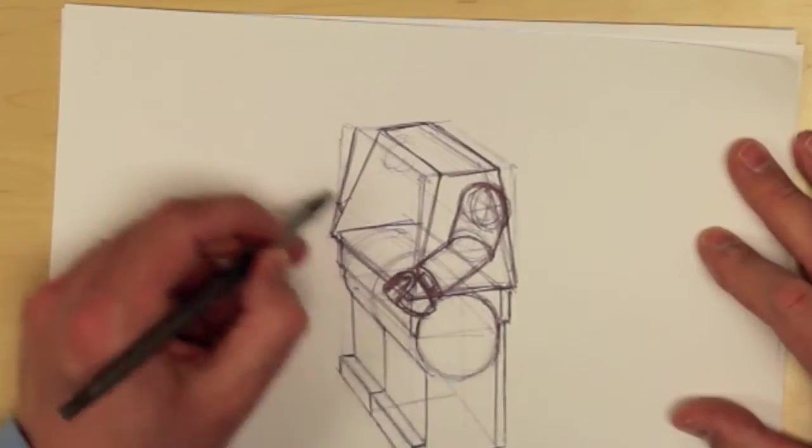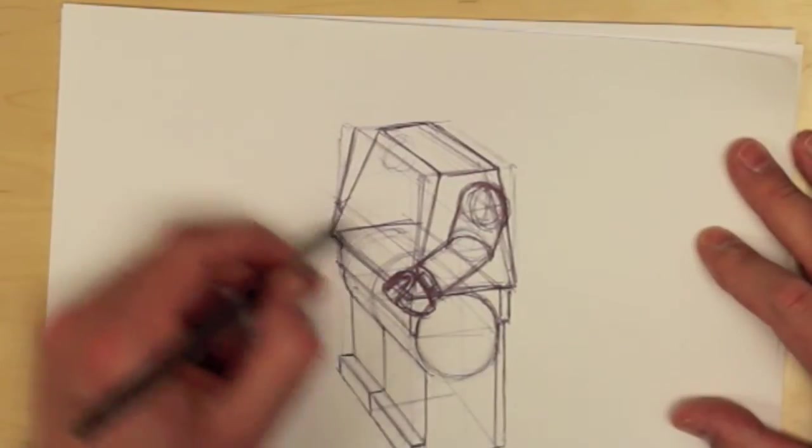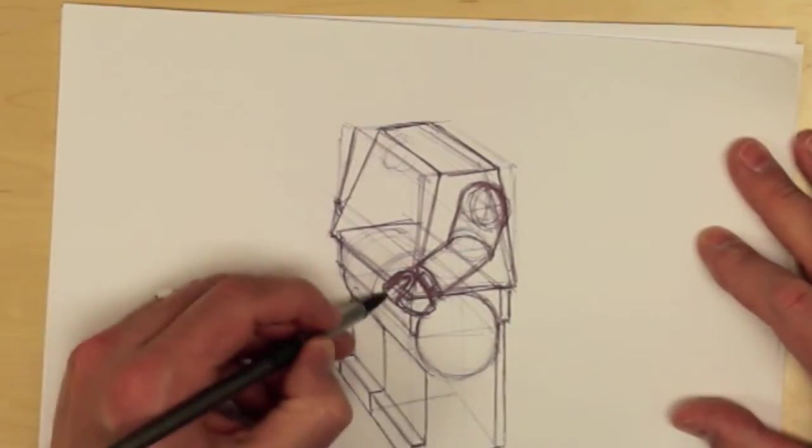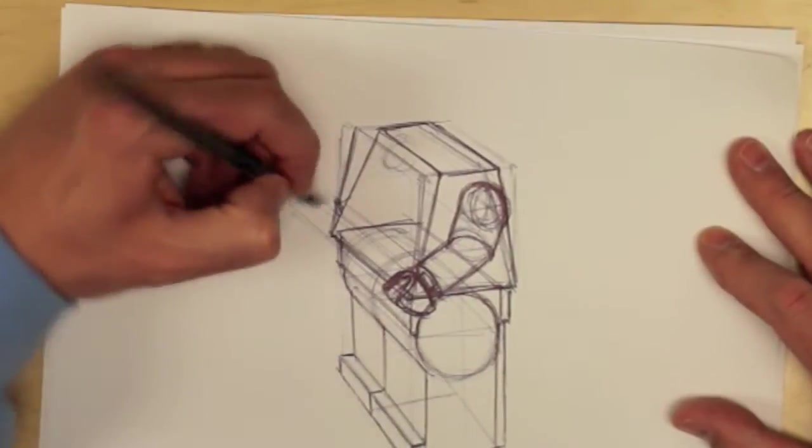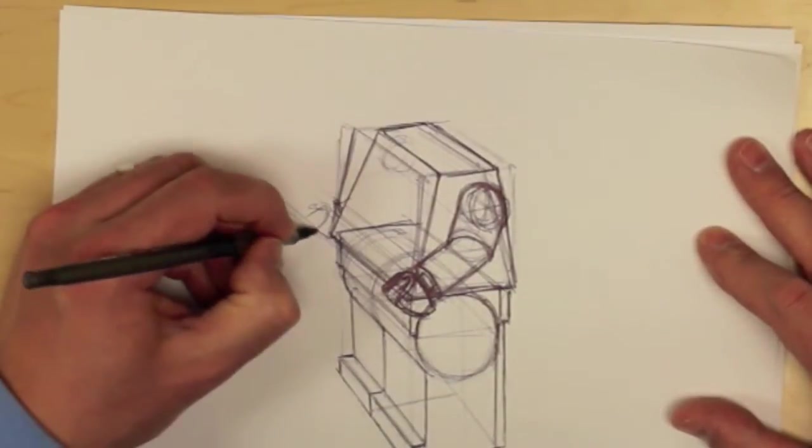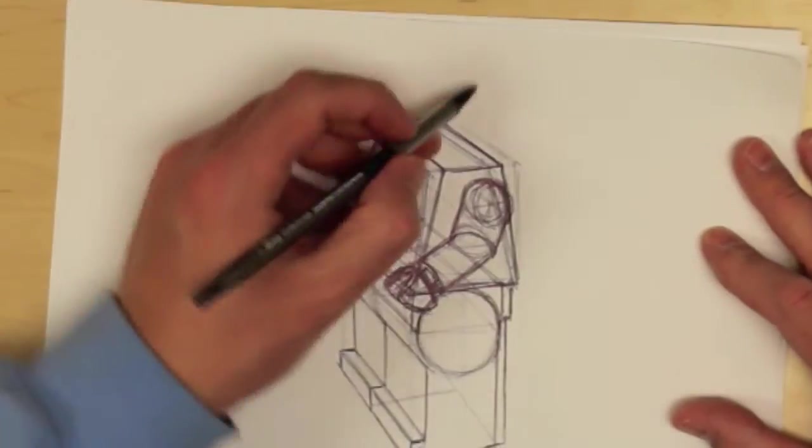And then you've got the other arm that comes out. You could always draw like a guideline from here to sort of see where that ellipse is going to happen. You can draw these guys out here and kind of figure out where this hand is going to be. And that will do for now.